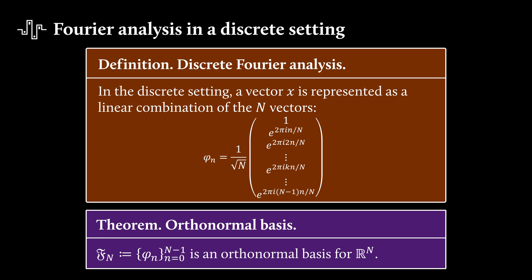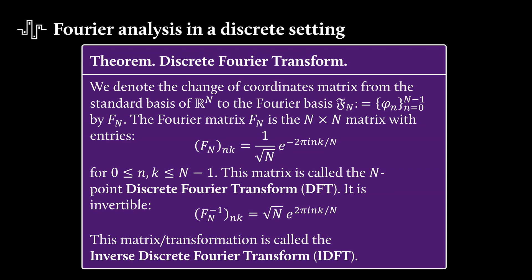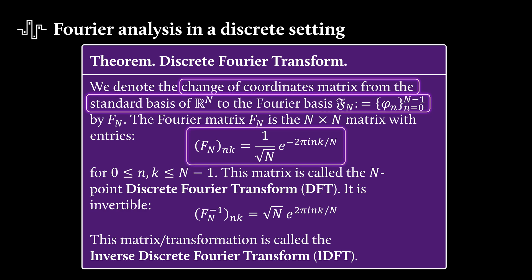Well, now that we have a basis, let's formulate the discrete Fourier transform theorem. What we can do now is construct a change of coordinates matrix from the standard basis of Rn to the Fourier basis we've just constructed. We call this change of coordinates matrix Fₙ. So this matrix is the n by n matrix with entries given by this expression that just follows immediately from our definition of the basis. So this matrix or this transformation is now called the DFT, the discrete Fourier transform. And one can also show that it's invertible because the matrix is unitary. So we have an inverse discrete Fourier transform, also abbreviated by IDFT.